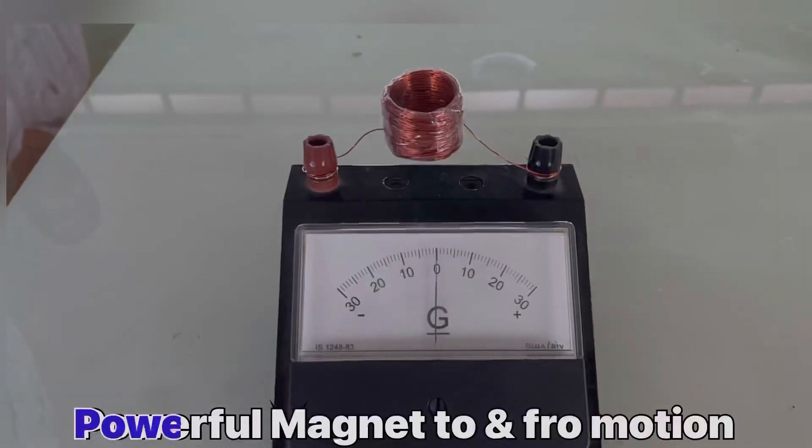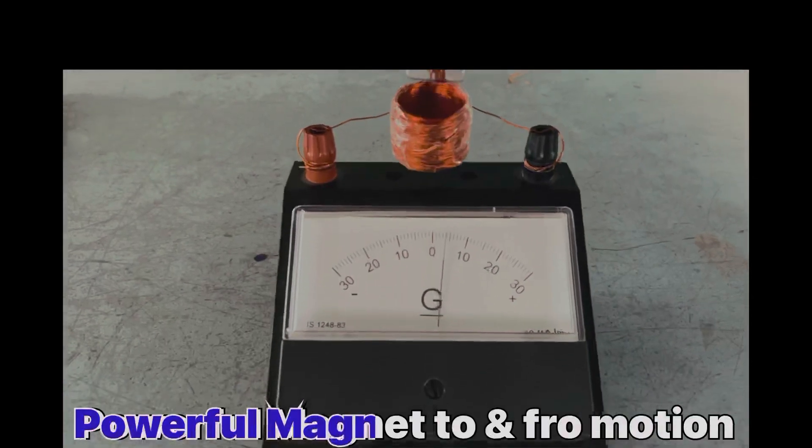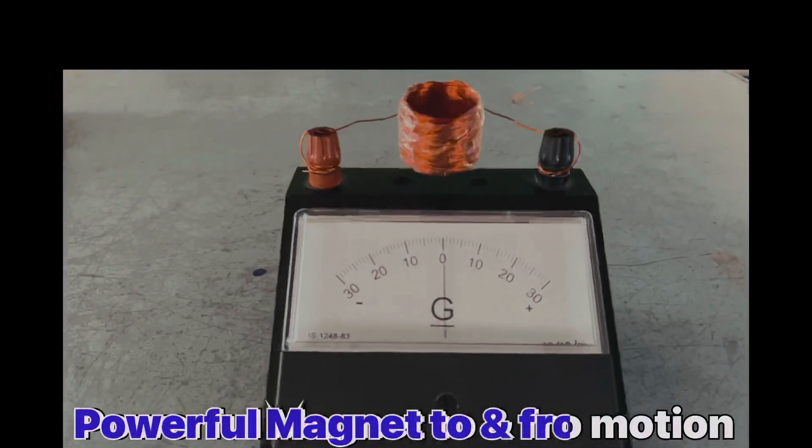Insertion and removal of a powerful magnet into the coil attached to the galvanometer produces a large deflection.